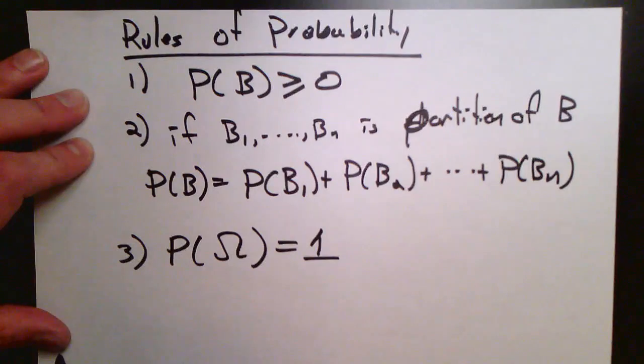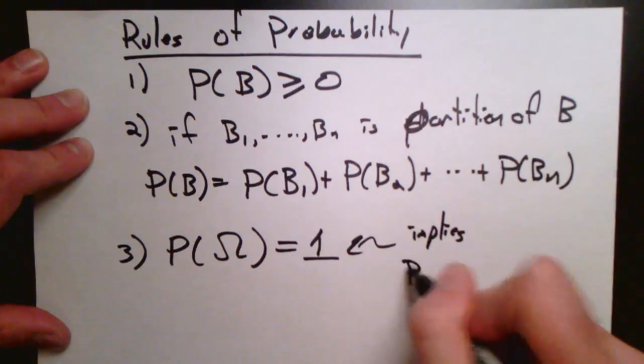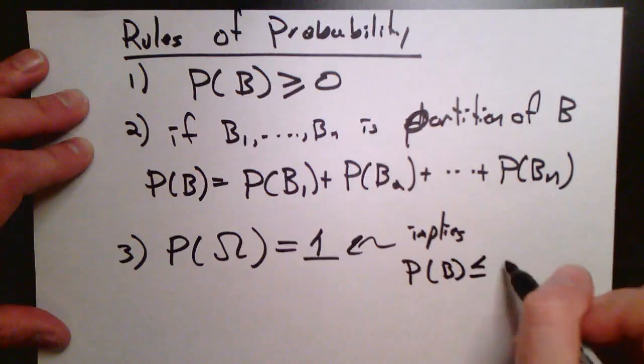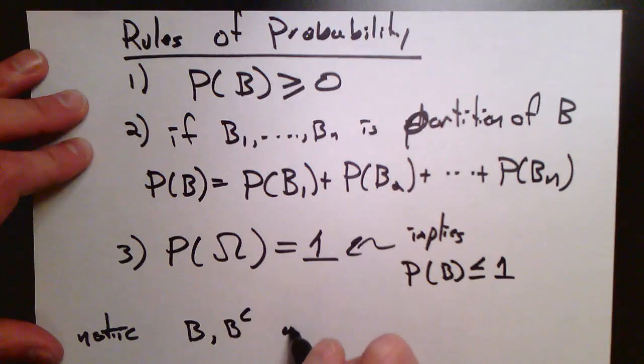So the probability of b equals the probability of b1 plus the probability of b2, all the way up to the probability of bn. And lastly, we need some normalization, so we decide that the probability of the entire outcome space, omega, is just 1.